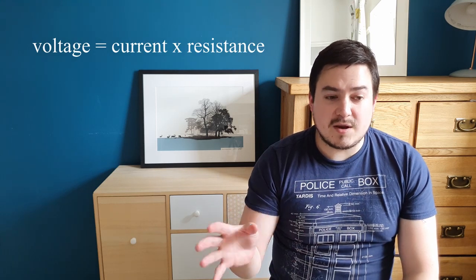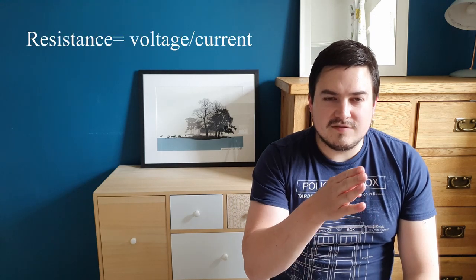Resistance is how difficult it is for the flow of charge — that current — to travel through a wire. The unit resistance is measured in is called the ohm, and the symbol is omega from the Greek alphabet, which looks just like this. The equation for calculating resistance is: voltage (or potential difference) equals current times resistance. Resistance is the voltage divided by the current.